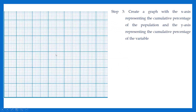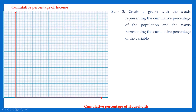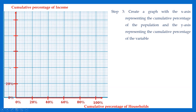In the third step, you should create the graph with the x-axis representing the cumulative percentage of population and the y-axis representing the cumulative percentage of income. The x-axis is named cumulative percentage of households and the y-axis is cumulative percentage of income. Mark the x-axis with values 0, 20, 40, 60, 80, 100 and similarly for the y-axis. Step 3 is done.